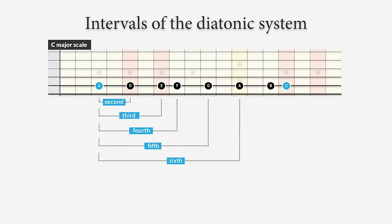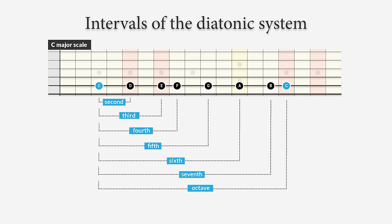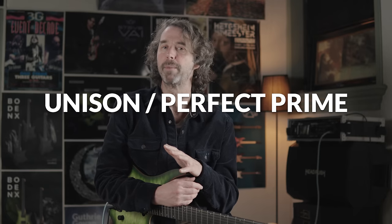The next interval is between C and the sixth note A — we call this a sixth. Then between C and the seventh — a seventh. The last interval is between C and the next C — we call this an octave, the distance between eight notes. There's also an interval between two notes that are exactly the same, like C to C, and this is called a unison interval or a perfect prime.